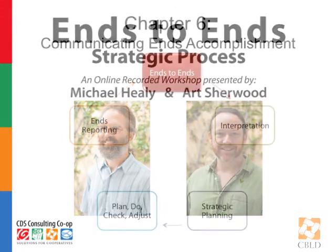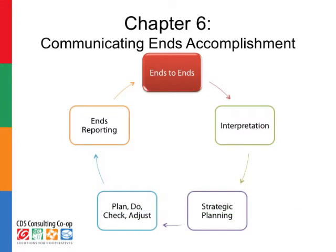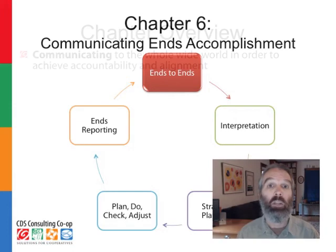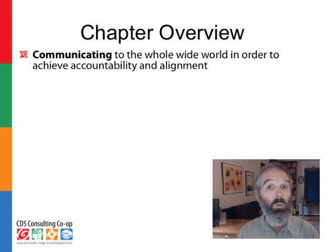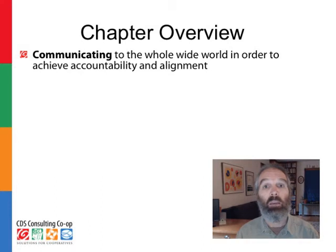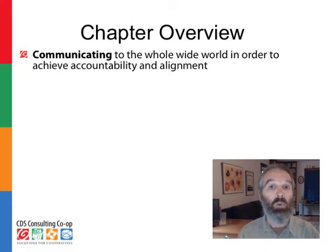Here in Chapter 6, we're going to close the loop, finish the cycle so it can be ready to start the cycle back over again. How do we make sure that ends come alive for everybody? It's through communication. We're going to spend a few minutes looking at the ways that managers and co-ops and boards can communicate ends accomplishment so that everyone understands.